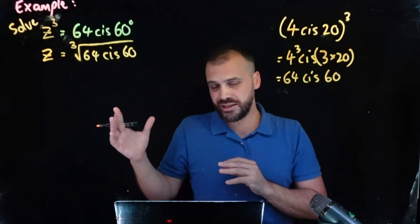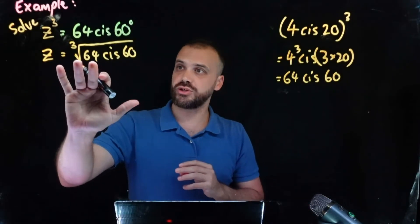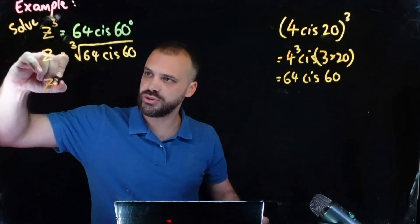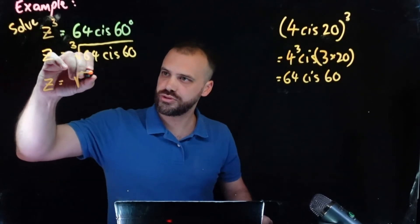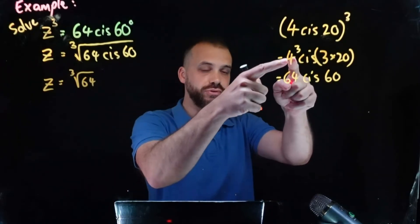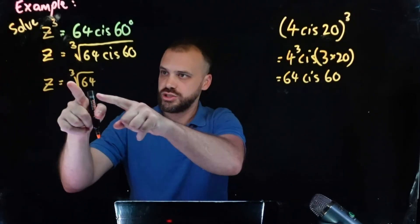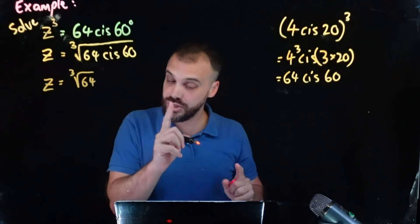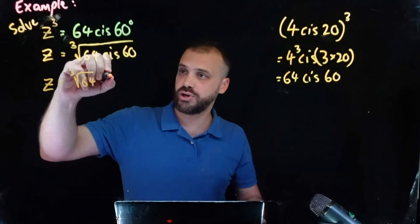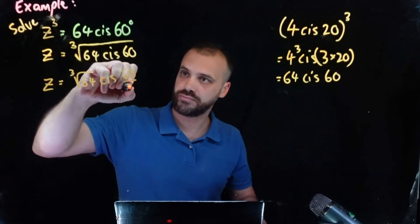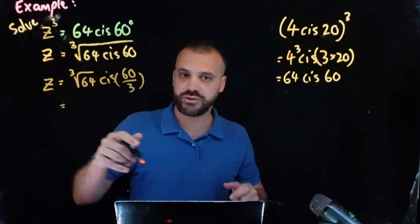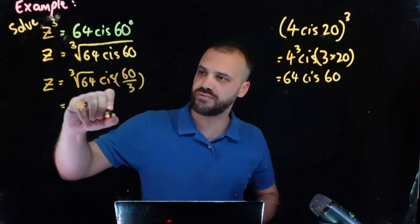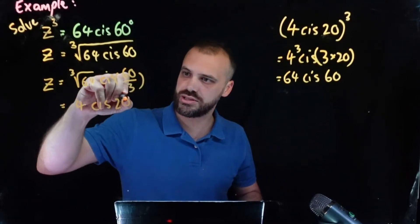So that gives us a nice algebraic way to find the cube root of 64 cis 60. The way that we do it is cube root the number 64, which is the reverse of what we did here. We cubed it so we cube root 64 here, and then we multiplied by three so let's divide by three here. And no surprises we're going to get the cube root of 64 which is four and then we're going to get cis 60 divided by three which is cis 20.